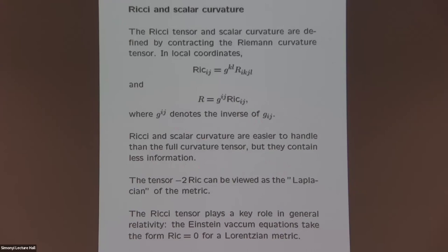The tensor −2Ric can be viewed as the Laplacian of the metric. The Ricci tensor plays an important role in the Einstein equations in relativity, where g is a Lorentzian metric of signature (1,1,...,1,n), and the Einstein equations take the form Ric g = 0. So this is a very natural object.